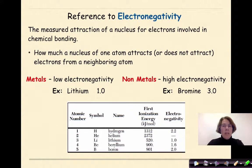Electronegativity is the measured attraction of a nucleus for electrons involved in chemical bonding, specifically our valence electrons. How much a nucleus of one atom attracts or does not attract electrons from a neighboring atom.